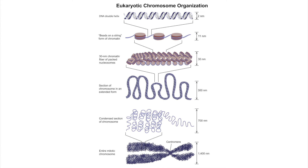At the next level of organization, you can take these chromatin fibers and coil them together to form a denser structure called the 30 nanometer fiber, named for its 30 nanometer diameter. With these 30 nanometer fibers you can further coil them through supercoiling to form chromosomes, which is the final structure.